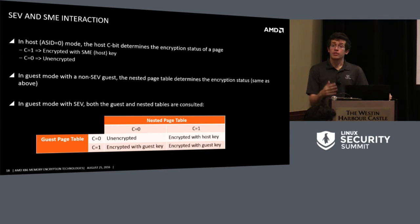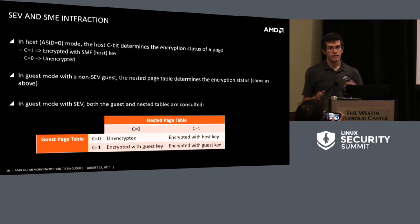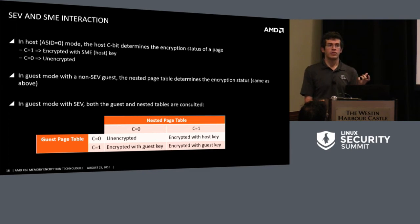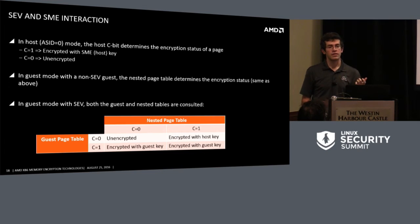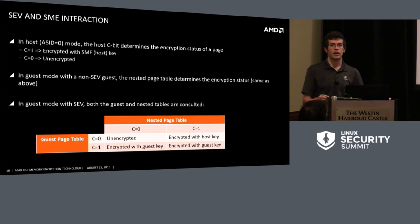On the interaction between SME and SEV: SME has a single encrypted-or-not option, while SEV is more complex with two levels of page tables and two C-bits. The guest gets first priority — if the guest marks data shared (C-bit = 0), we then consult the nested page tables to decide if the memory should be truly unencrypted or encrypted with the hypervisor key. This allows a system where all memory is encrypted — some with the guest key, some with the hypervisor key.